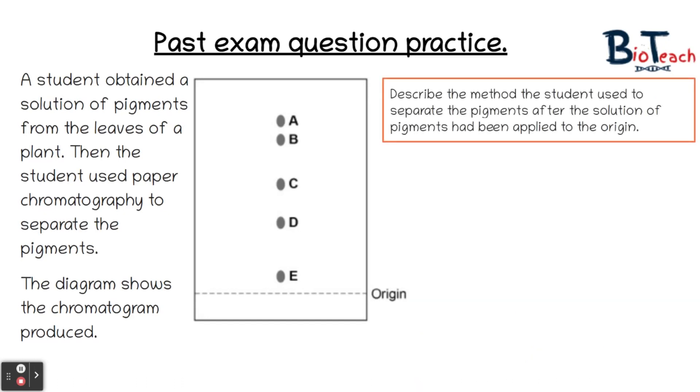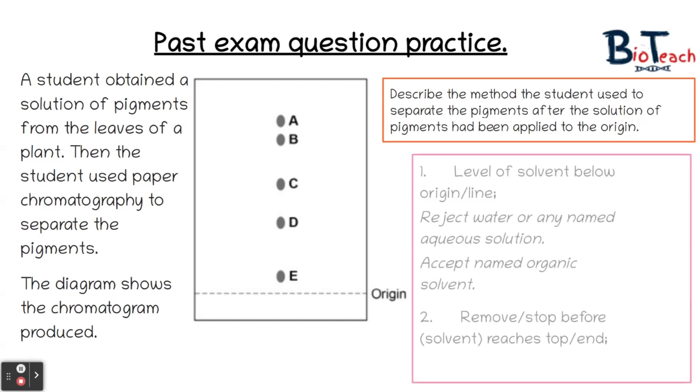Another question that's asked is to describe the method the student used to separate the pigments after the solution of pigments had been applied to the origin. So if you want to pause the video now and have a go at answering this question, we'll go through the answer in a second. For this you want to talk about how you left the solvent line that was below the line of origin. Remember that's one of the things that we just talked about in the method, that the solvent line should always be below the origin so the solvent can pass through the origin. Basically you would stop the test when the solvent almost reached the top, so about a centimeter from the top. Then you would remove the chromatogram from the solvent and you would draw a line as to where the solvent line ended.